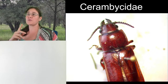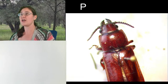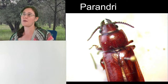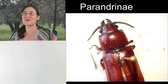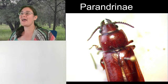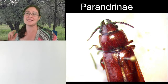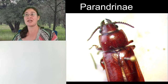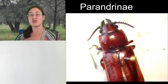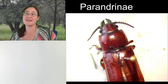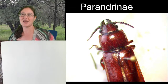With cerambycids that's all of them, but this one in particular is in a subfamily that we call Parandrinae. You'll notice that family names end in D-A-E, subfamily names end in I-N-A-E, and if you look at tribe names for insects, they end in I-N-I. So that's a little bit of etymology for those of you who are interested in word endings and the like.